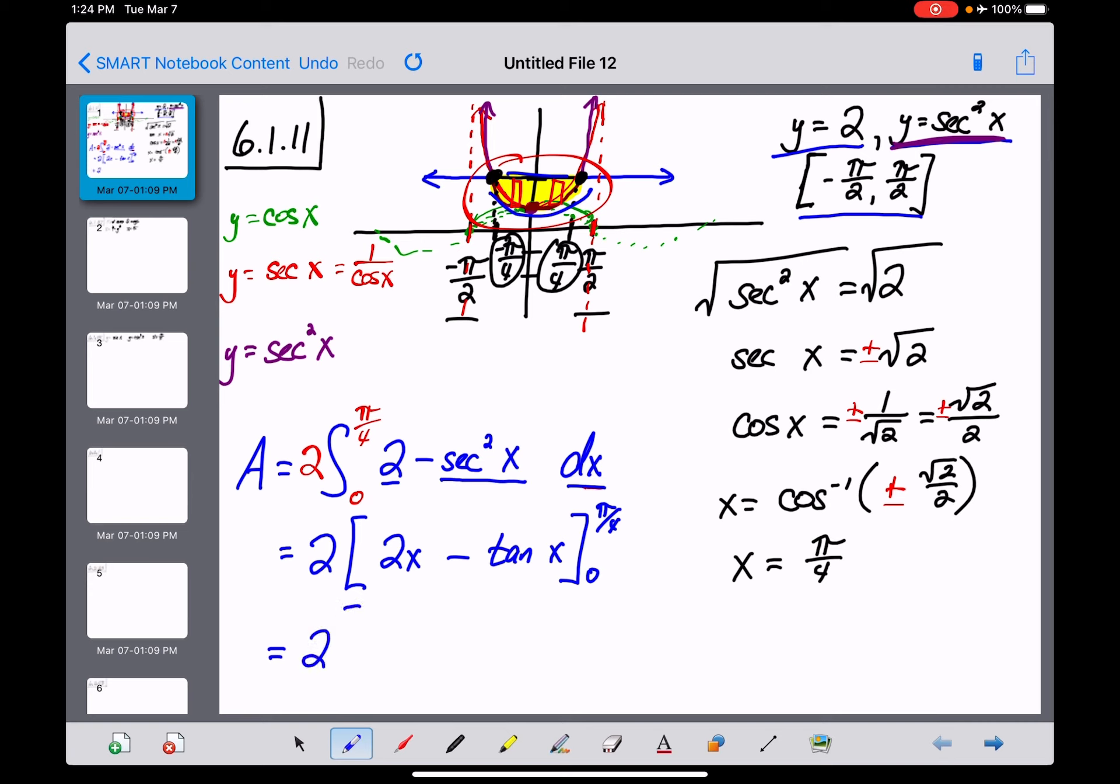That 2 I'll keep out in front. Start a big set of brackets, and now parentheses. 2 times pi over 4 is 2 pi over 4, or pi over 2, minus the tangent of pi over 4, which is just 1.